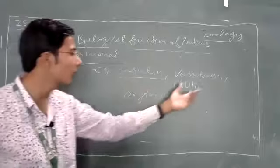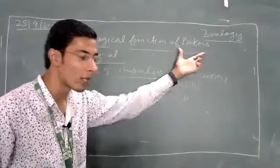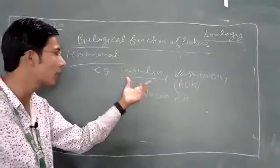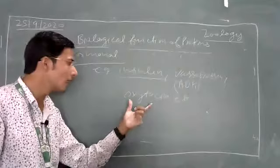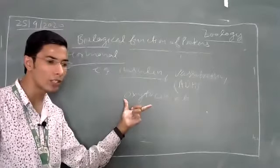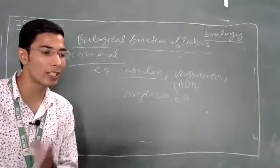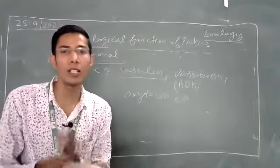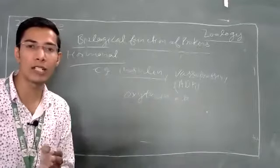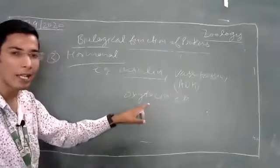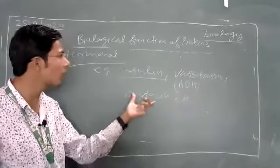You need to know the functions of these hormones: insulin regulates glucose levels in your body, vasopressin helps retain water, and oxytocin — in the third trimester of pregnancy, oxytocin receptors activate and stimulate labor pain. Oxytocin also helps in milk ejection. These are all proteins and their hormonal functions.